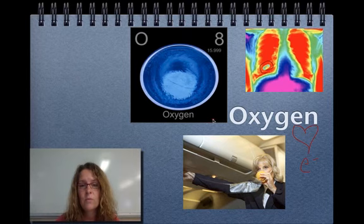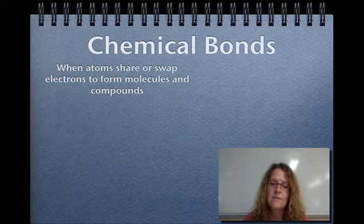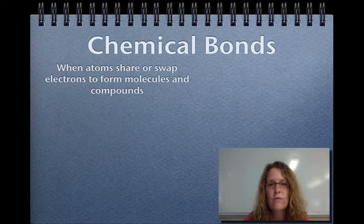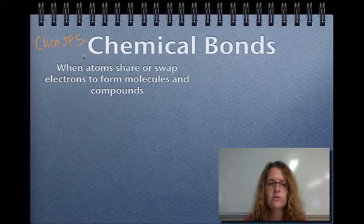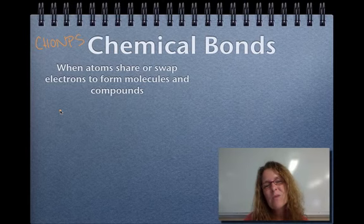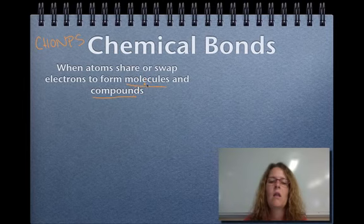The last thing that we're going to talk about today is chemical bonds, and a chemical bond is defined as when atoms share or swap electrons to form molecules and compounds. In chemistry, you'll focus a lot more on the individual elements. Remember, our important elements are carbon, hydrogen, oxygen, nitrogen, phosphorus, and sulfur. But in chemistry, you'll focus much more on the individual elements. In biochemistry and most of biology, we are really interested in the molecules and the compounds. So molecules and compounds, and you don't have to know the difference between those.